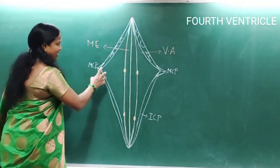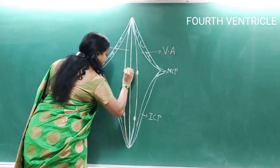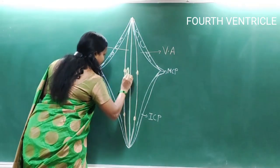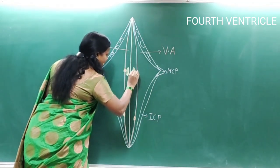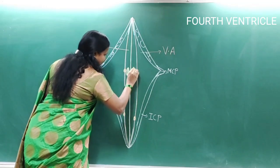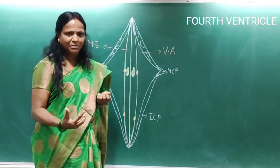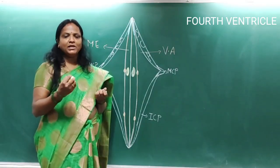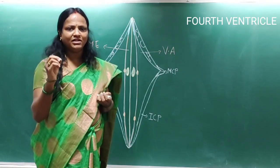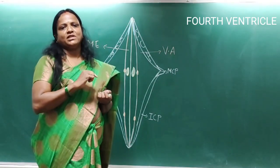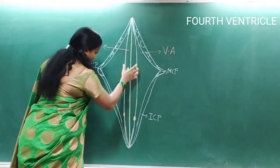At the level of the superior fovea, the medial eminence presents a bulge called the facial colliculus. The facial colliculus is an impression formed by the internal genu of the facial nerve, which loops across the nucleus of the abducent nerve.